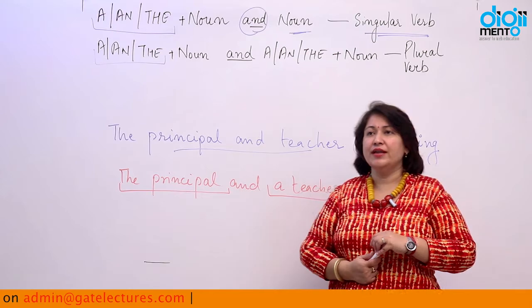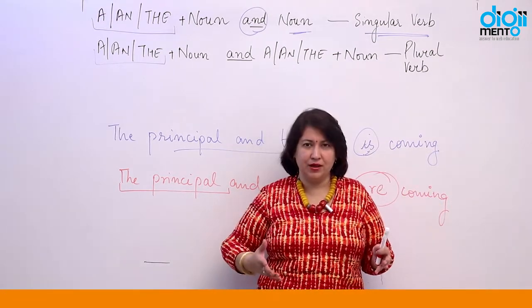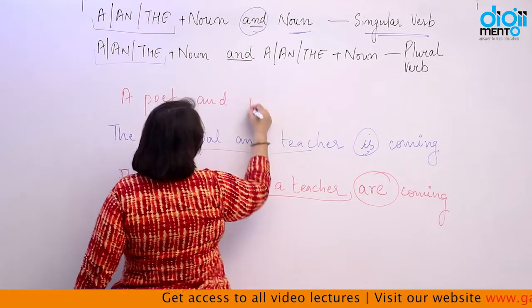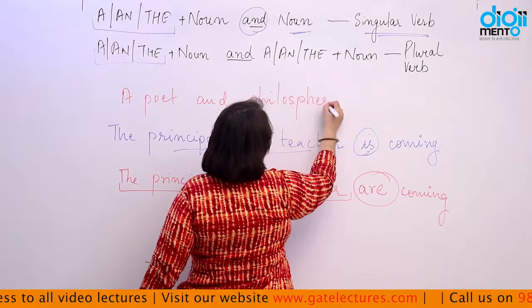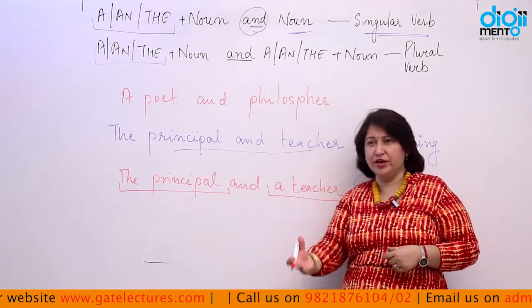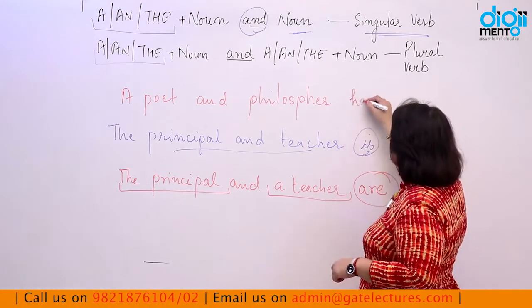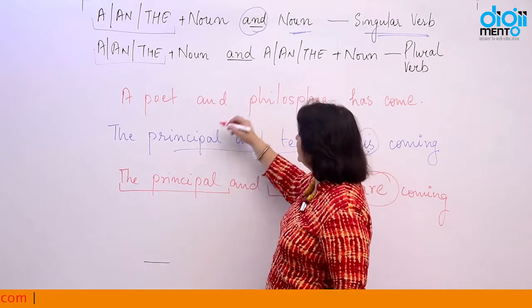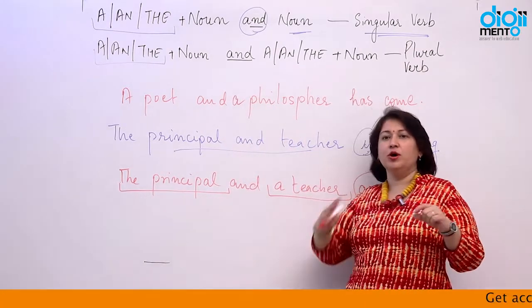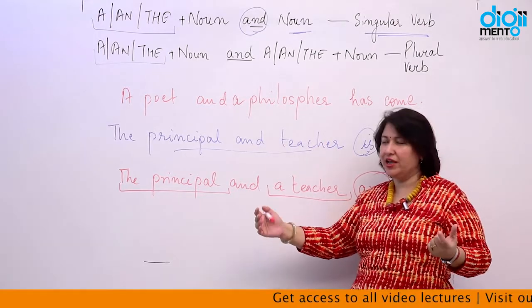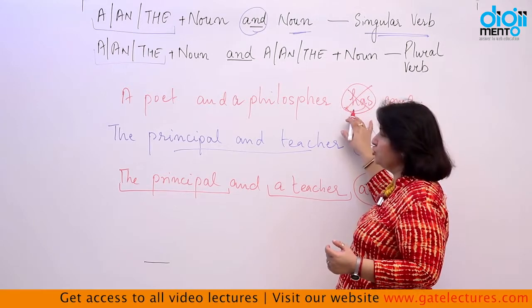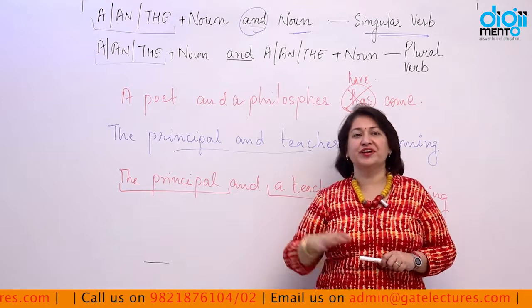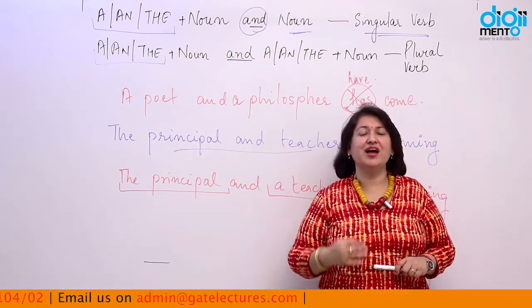Similarly, consider 'a poet and philosopher has come' — here we are talking about one person who is both a poet and a philosopher, so the verb is singular: 'has come.' But if I say 'a friend and a philosopher,' we are talking about two different people, so the verb changes from singular to plural: 'have come.' This is the rule relating to nouns. The next rule relates to adjectives.